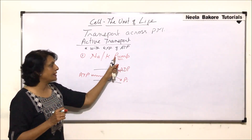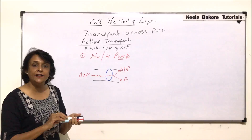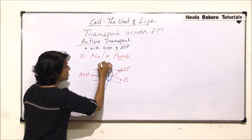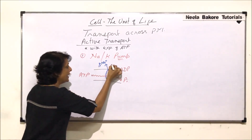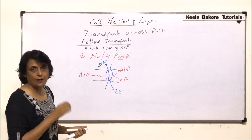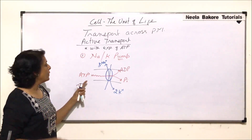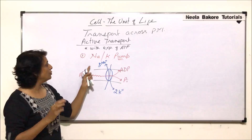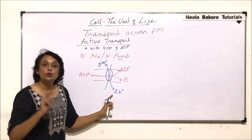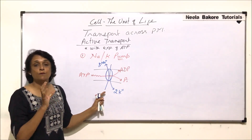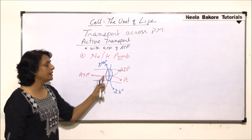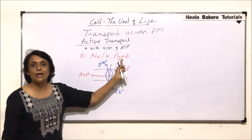This protein — the pump — uses this energy to transport three sodium ions out of the cell in exchange for two potassium ions into the cell. The numbers are fixed: with expenditure of one ATP molecule, three sodium ions are pumped out in exchange for two potassium ions. This number is very important, and one protein facilitates this transport — hence we call it the sodium-potassium pump.